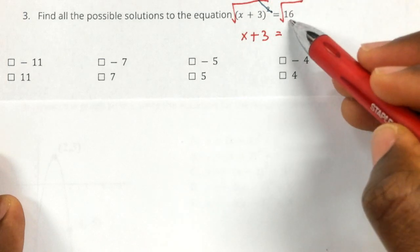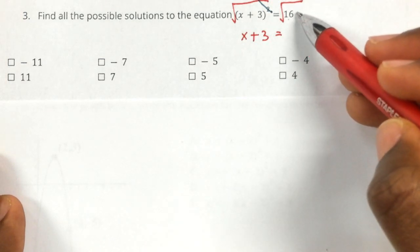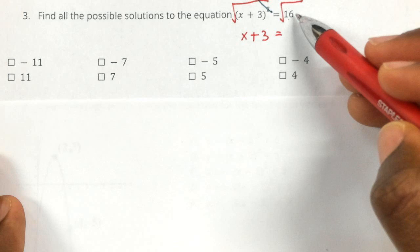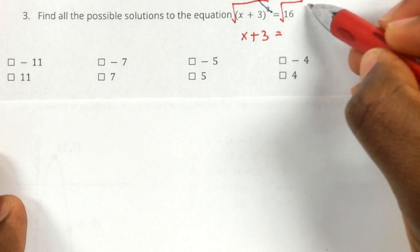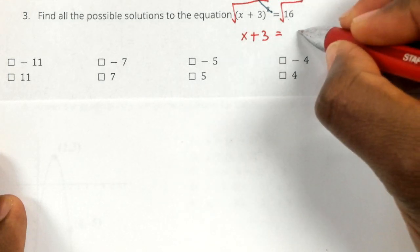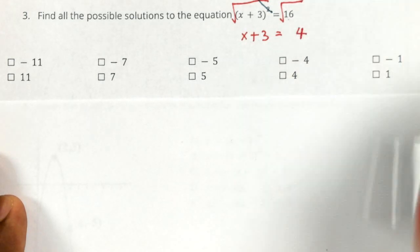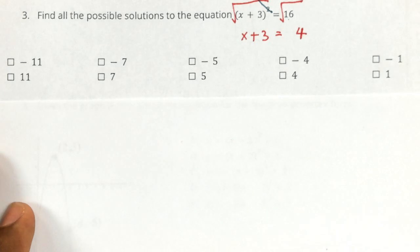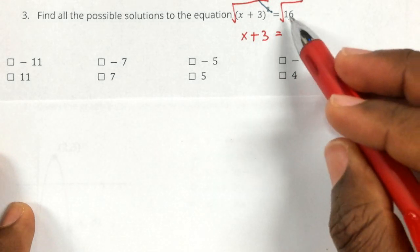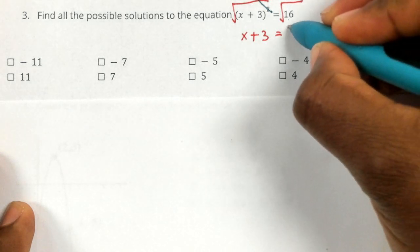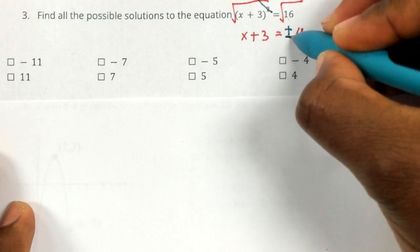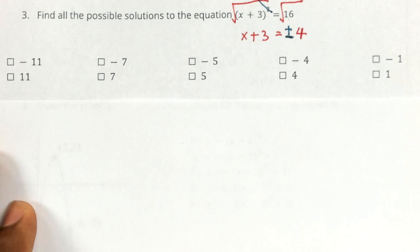So you should know that the square root of 16 is what - what two same numbers multiply to give you 16? Four and four. So the square root of 16 is four. So whenever you take the square root of a number, you always need to represent it as a plus or minus. You need to represent it as a positive or a negative.